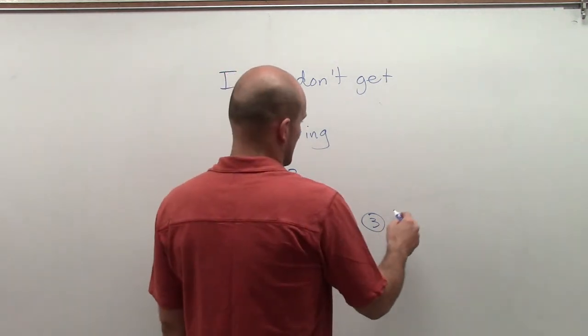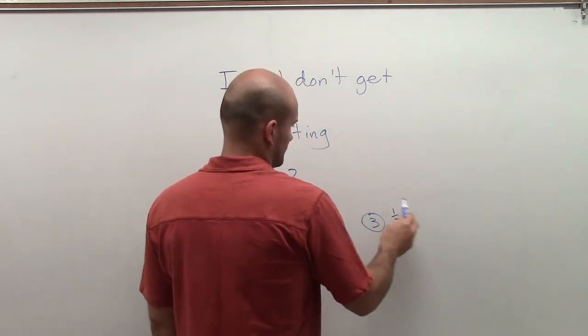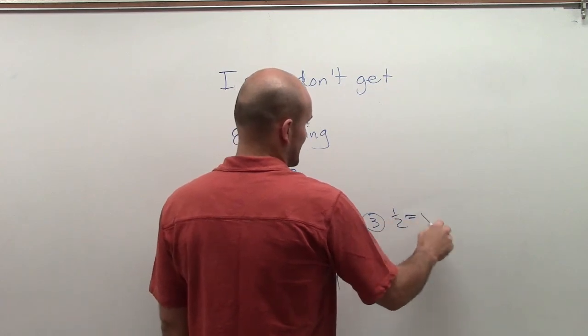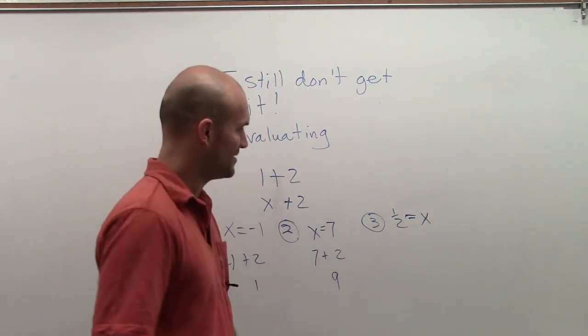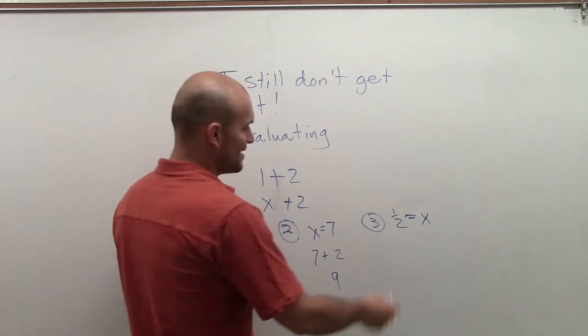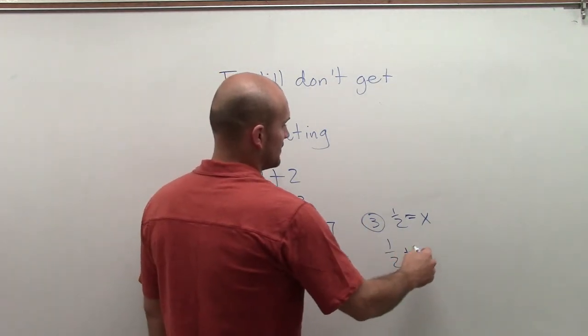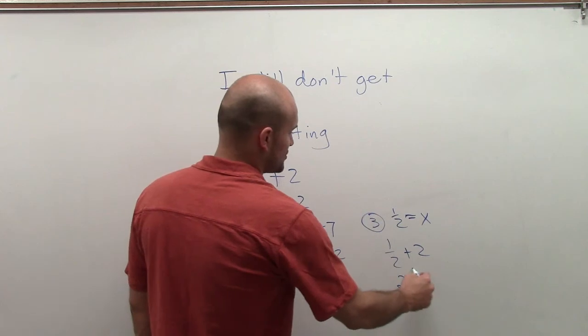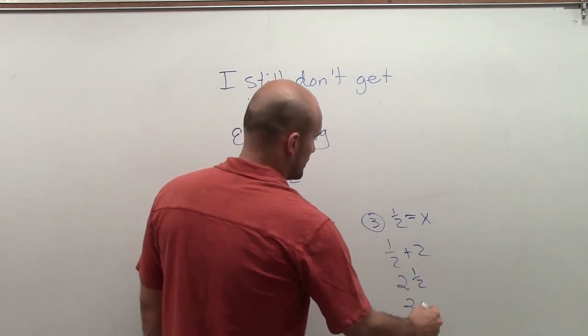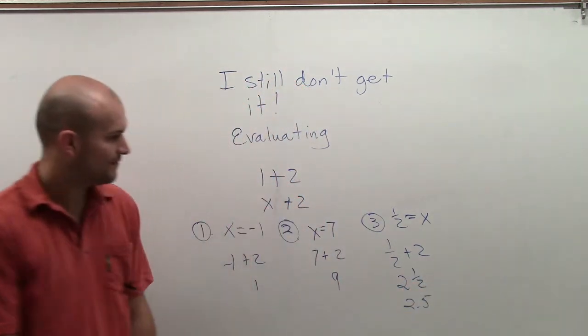So let's just do one more. Let's do 1 half equals x. Let's write it the wrong way, not the wrong way, but the way we're not used to. So x equals 1 half. That just means we're going to do 1 half plus 2. So that equals 2 and 1 half or 2.5 written as a decimal.